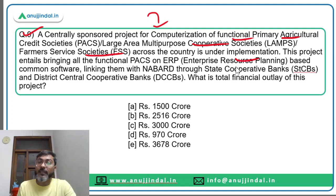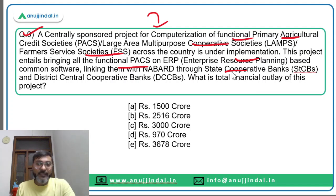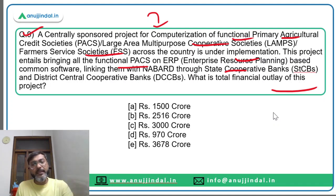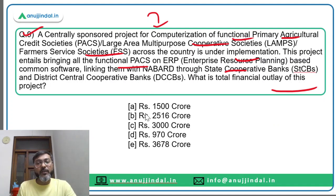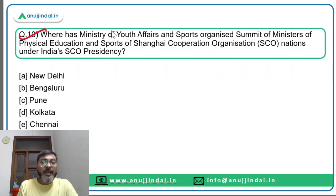Question nine: a centrally sponsored project for computerization of PACS (Large Area Multi-purpose Cooperative Societies / Farmer Services Societies) across the country is under implementation. This project entails bringing all functional PACS onto ERP-based common software and linking them. The total financial outlay of this project is ₹2516 crores. Option B is the correct answer.